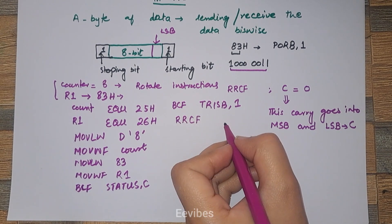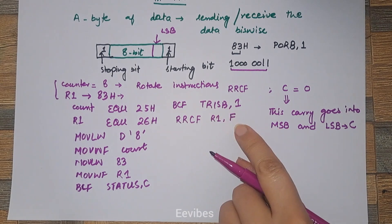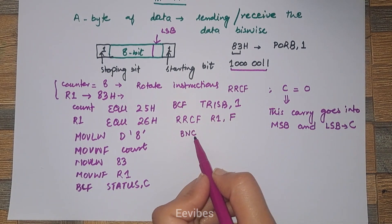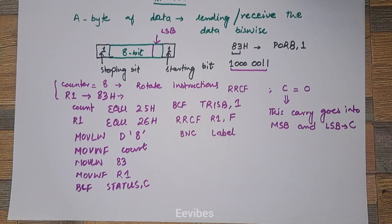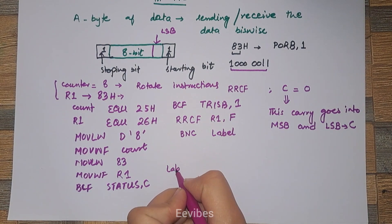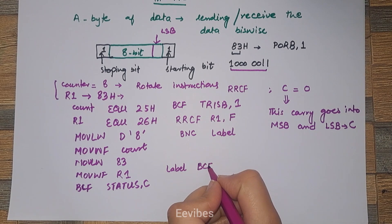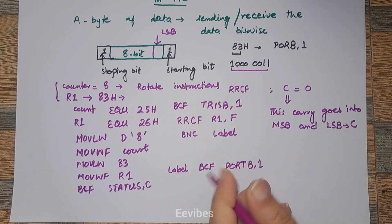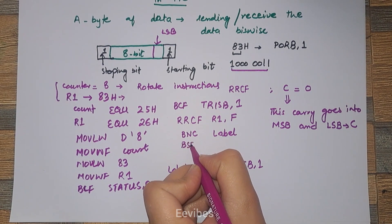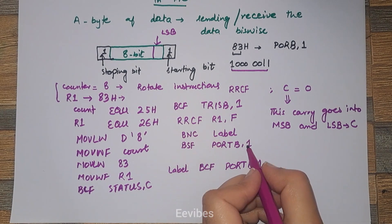Next, we rotate right through carry the contents of file register R1 using RRF R1, F — the result is stored back in the file register. Then we add a branch condition: if there is no carry (BTFSS STATUS, C), we go to a certain label where we transmit a zero bit — BCF PORTB, 1 — sending 0 at the first pin of Port B.